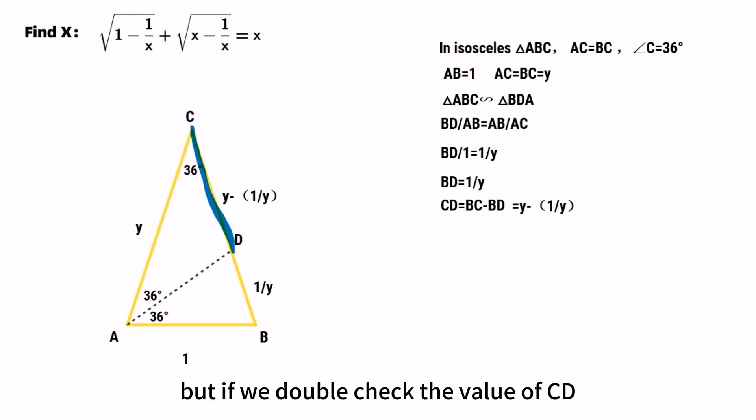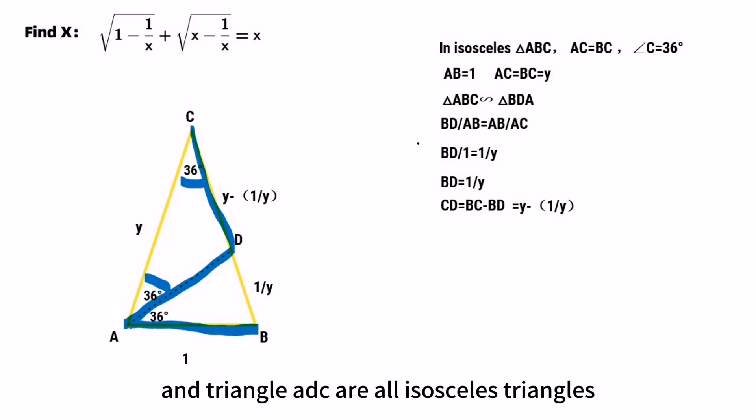But if we double check the value of CD, it has another value in this diagram. Because we can get CD equals AD, since triangle BDA and triangle ADC are both isosceles triangles.